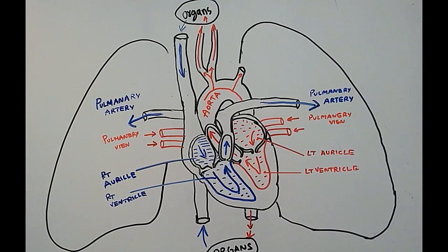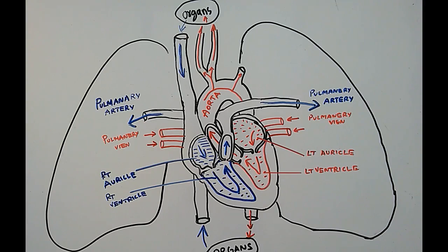First, we have to know about the heart. Many people think that the heart purifies the blood, but the reality is that the lungs are the ones which purify the blood. By purification, I mean carbon dioxide-containing blood is converted into oxygenated blood. We will first learn about the heart and later see how the cycle of circulation happens.